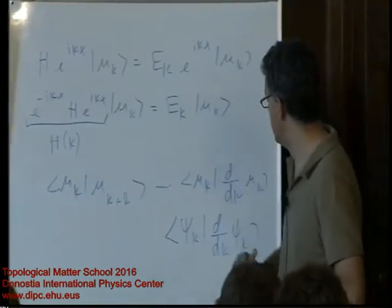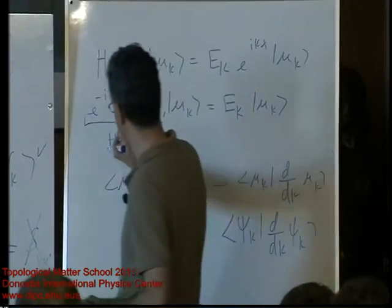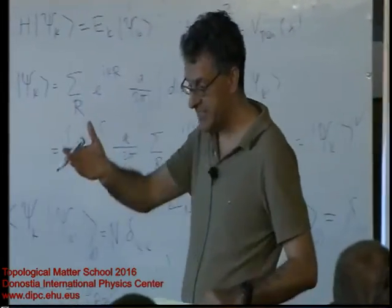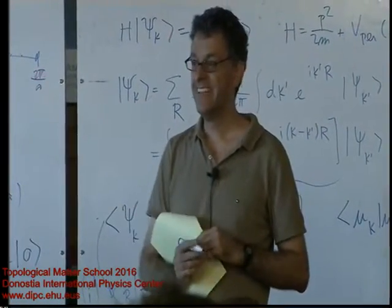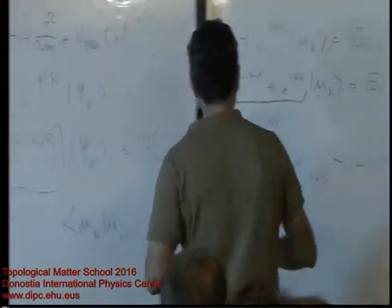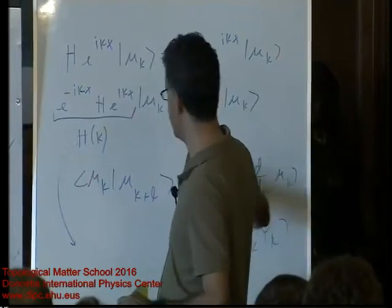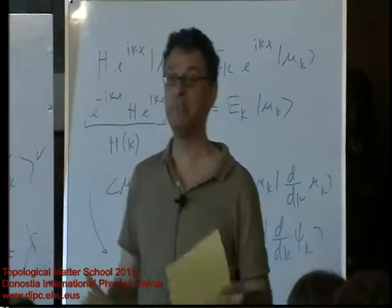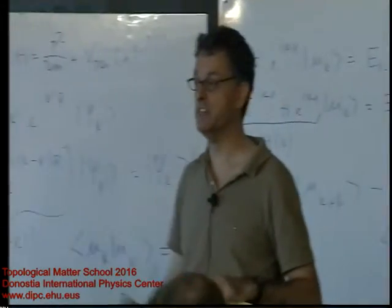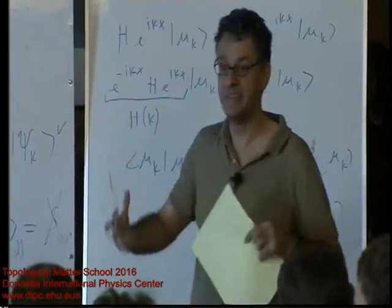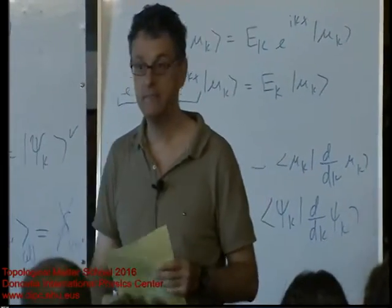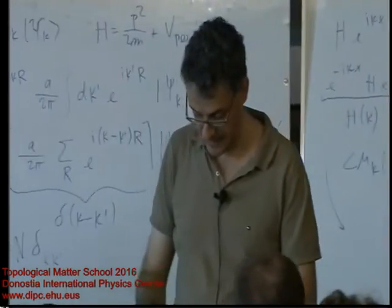The general setting of Michael Berry's paper is: imagine a system that depends on some parameter, and you take that parameter on a closed loop. In solid-state physics, we have a built-in parameter space — the Brillouin zone — where the Hamiltonian H(k) has a parametric dependence on k. So Berry phases naturally appear in connection with the u's. That's the spirit of the thing.